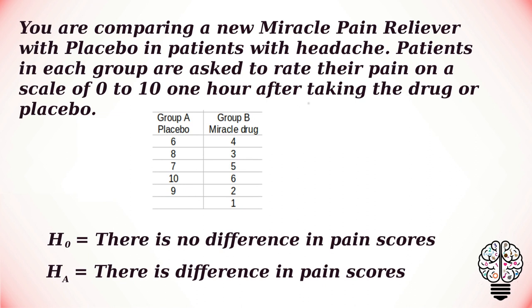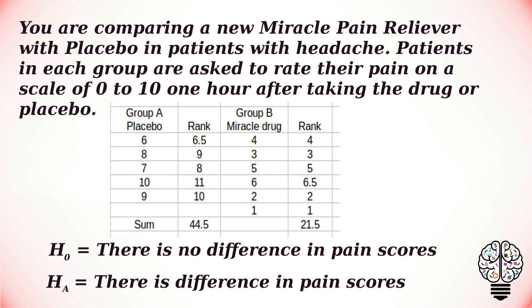Our null hypothesis is that there is no difference in pain scores between the two groups, and our alternative hypothesis is that there is a difference in pain scores between the two groups.